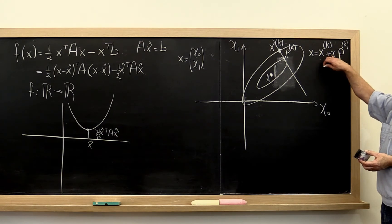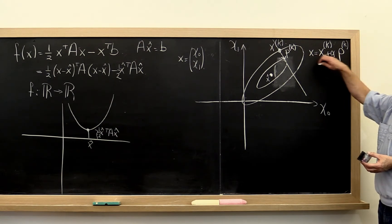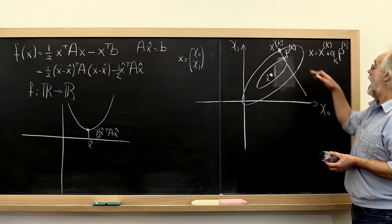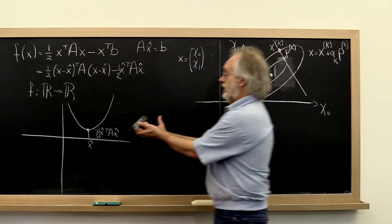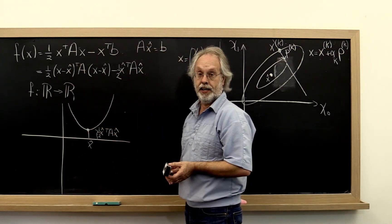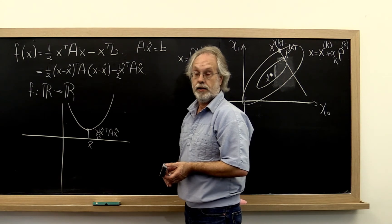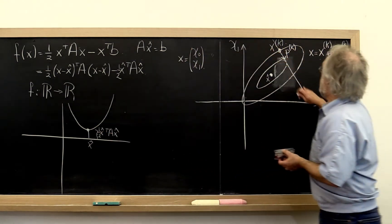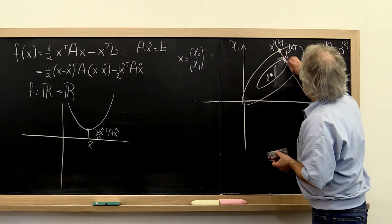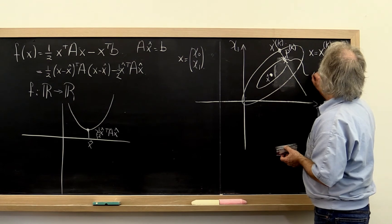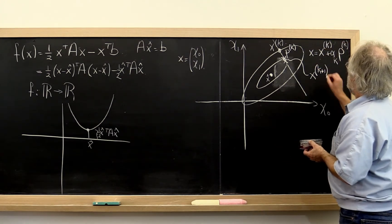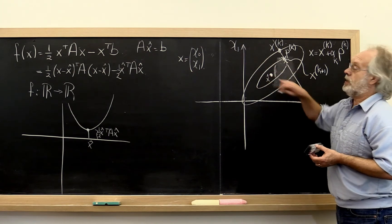Let's pick the alpha k that optimizes this. Well, in this direction our function will simply look like this except that it's parameterized by alpha or alpha k. We can then find what the minimum is in that direction. Let's say it's somewhere right here.